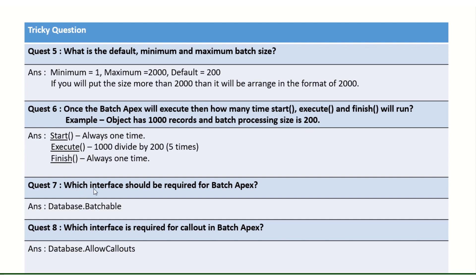Which interface is required for Batch Apex? You must implement database.Batchable — that's what enables you to write the start, execute, and finish methods. For making callouts inside a batch, you also need to implement database.AllowCallouts, only then are you able to send HTTP callouts from the batch.